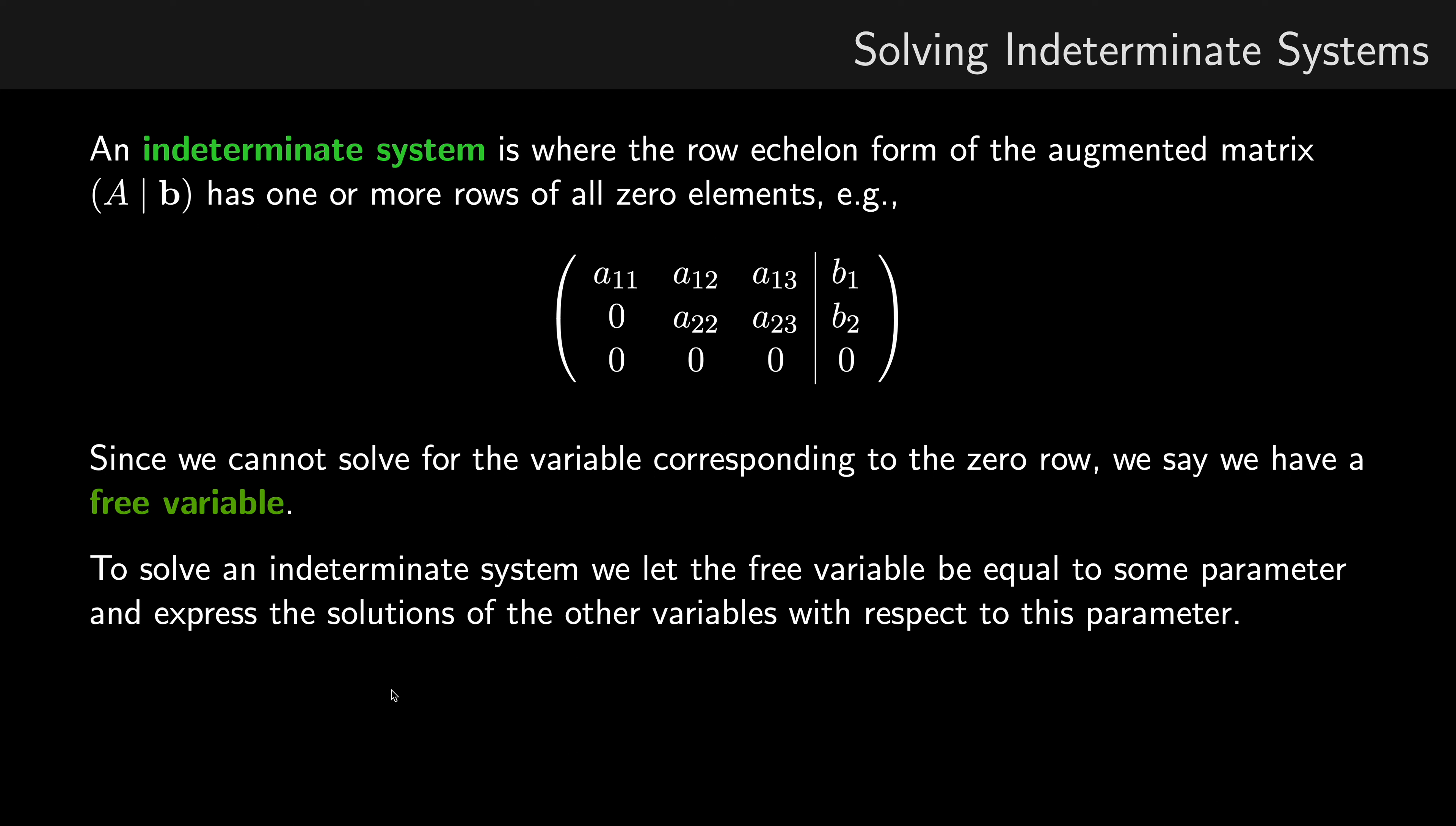If you're not sure what we mean by the augmented matrix and row echelon form, see the video on Gaussian elimination. So here we have an example. This is in row echelon form. I have pivots of A11 and A22, so the pivot is the first non-zero element in a row. And we also have a row of all zeros here.